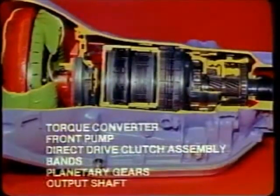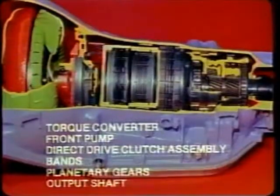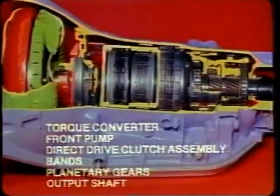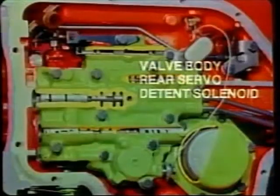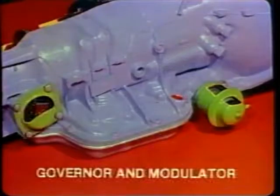Before you begin, let's review the function and location of some of the main components in the transmission. Starting from left to right on your screen, they are: the torque converter assembly, the front pump, the direct drive clutch assembly, the bands, the planetary gears and the output shaft, the valve body, the rear servo, the detent solenoid, and the governor and modulator.